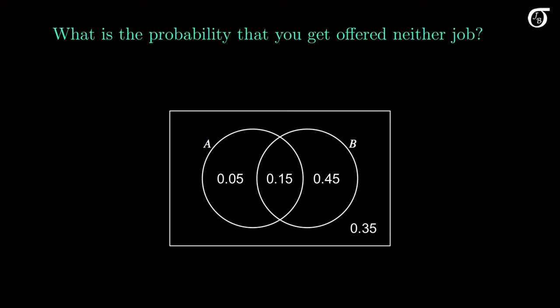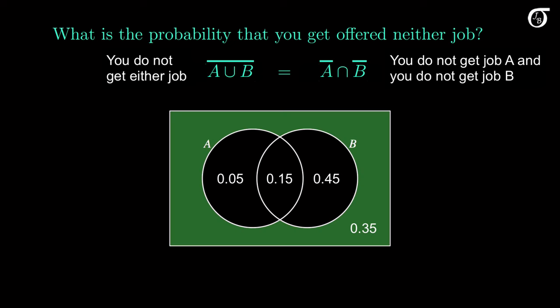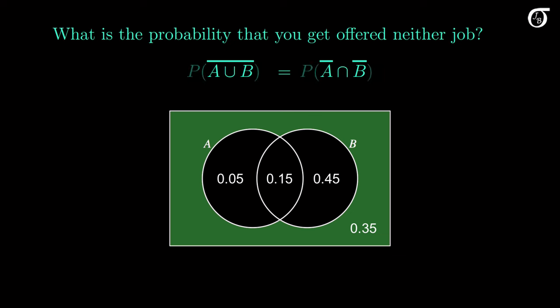Suppose we are interested in the probability that you get offered neither job. We can think of this in two slightly different ways: the complement of the union is the event that you do not get job A or job B, and the intersection of the complements is the event that you do not get job A and you do not get job B — a slightly different perspective, but they mean the same thing. That event is represented by the region outside of the circles. Since they're the same region, they have the same probability — and by inspection of the Venn diagram, that probability is 0.35.